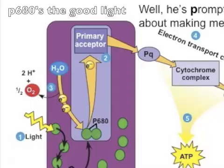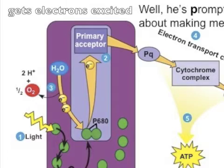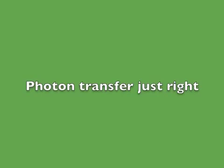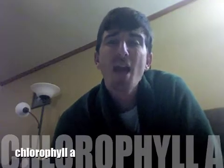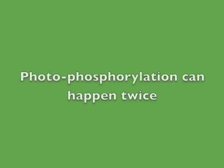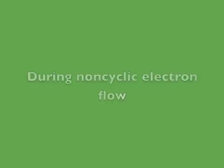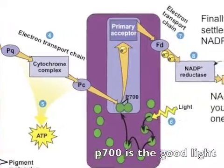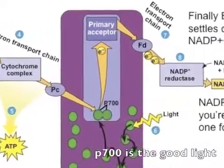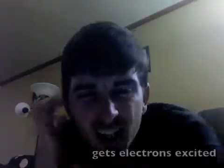Photosystem 1 controls the cyclic flow. P680 absorbs good light, electrons excited, photons transfer — just right — chlorophyll A. Photophysical reactions at photosystem 2. P700 absorbs good light, electrons excited.